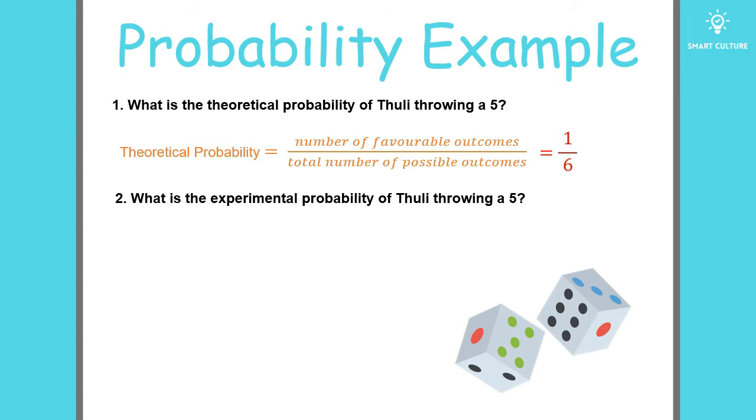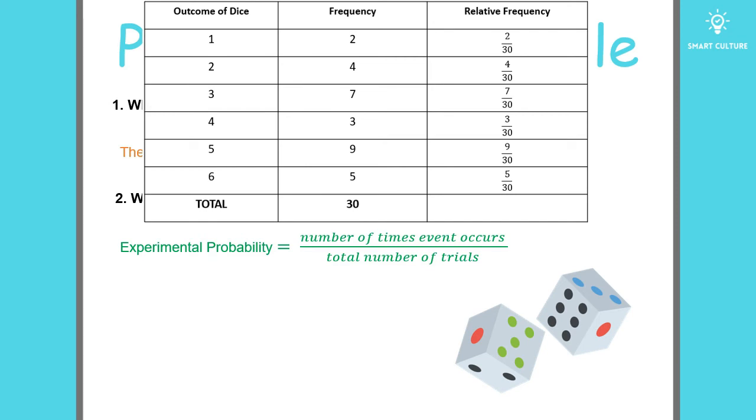Let's take a look at question 2. What is the experimental probability of Tudu throwing a 5? So now we have to go back to the table. We have to use the formula for experimental probability. It's the number of times an event occurs divided by the total number of trials. So it will be 9, as you can see in the table, divided by 30, the total number of trials.